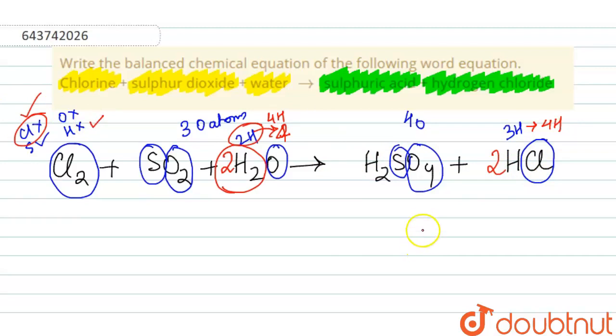After this, we have to just check whether oxygen atoms are balanced or not. So here we have two oxygen atoms, and here we have two oxygen atoms - that is four oxygen atoms in the reactant side - and we have four oxygen atoms in the product side.